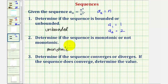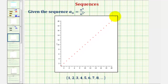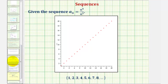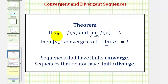Finally, we want to determine if the sequence converges or diverges, and if it converges, determine the value it converges to. Because the value of these terms are increasing without bound, the sequence is going to diverge. More formally, if a_n equals f(n) and the limit as x approaches infinity of f(x) equals L, then the sequence a_n converges to L. So sequences that have limits converge, and sequences that don't have limits diverge.